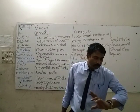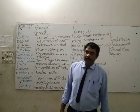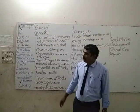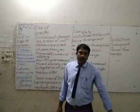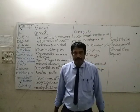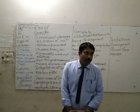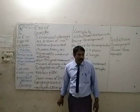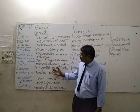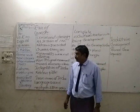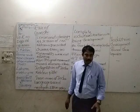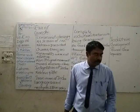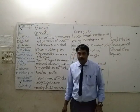The Home Rule Movement of Bal Gangadhar Tilak was located in Maharashtra, with its center at Pune. The center of Annie Besant's Home Rule Movement was in Madras. Both of them worked hard for the freedom of India, demanding that India should be ruled by Indians only. Jawaharlal Nehru actively participated in the Home Rule Movement.